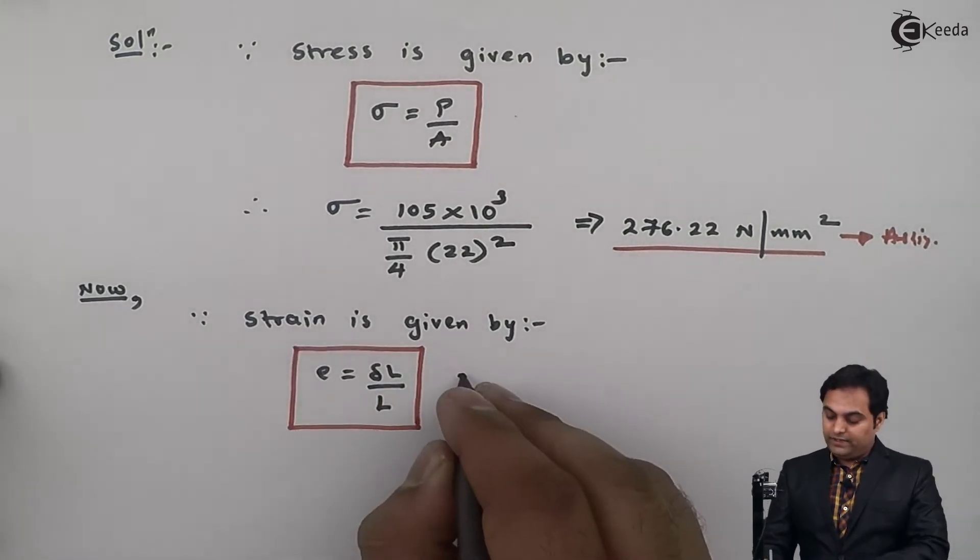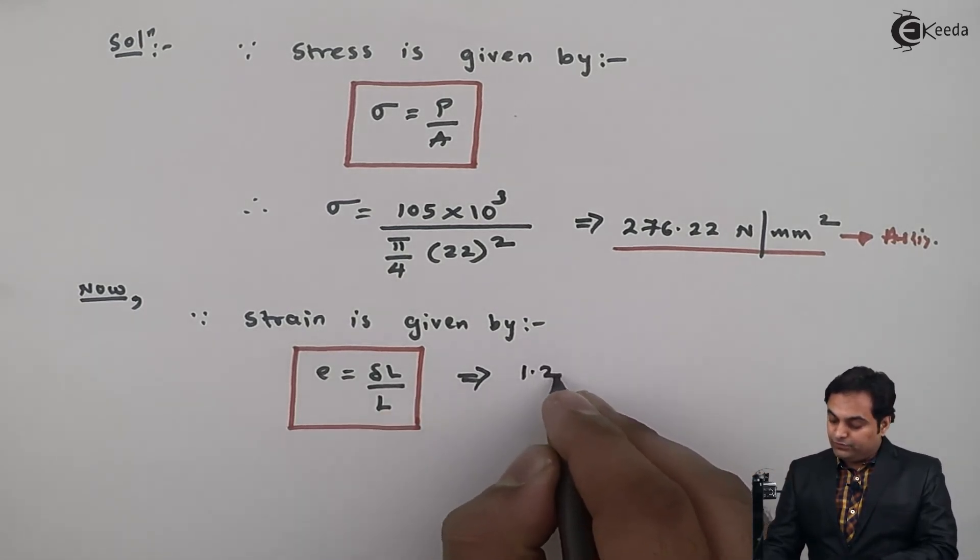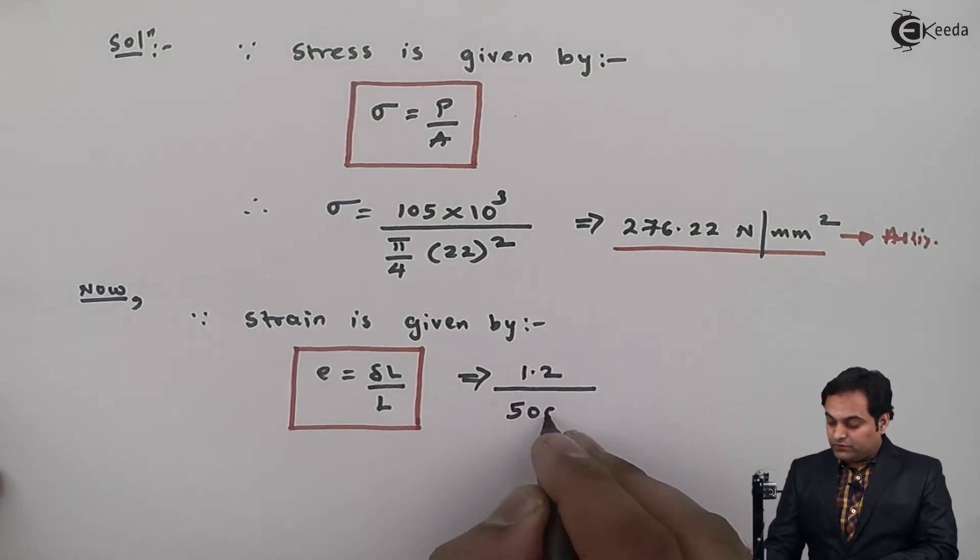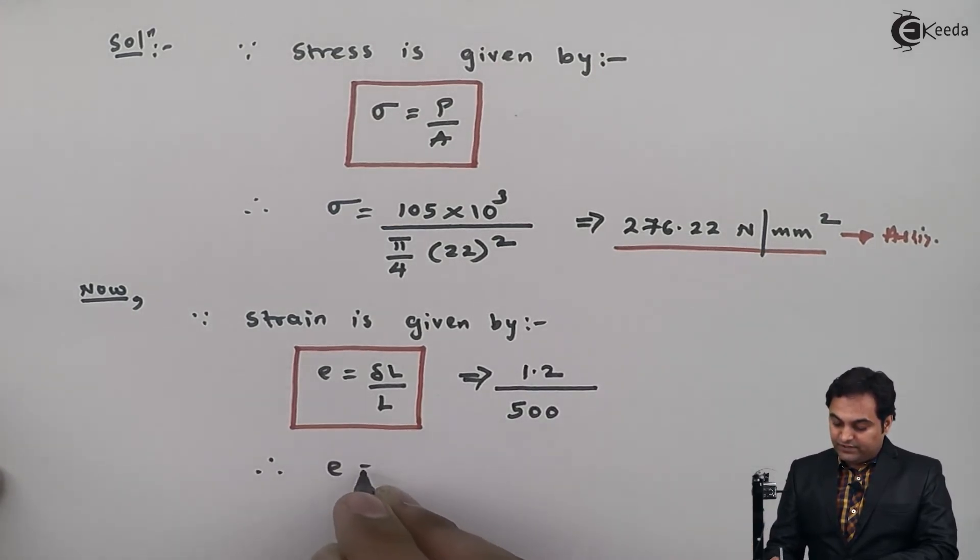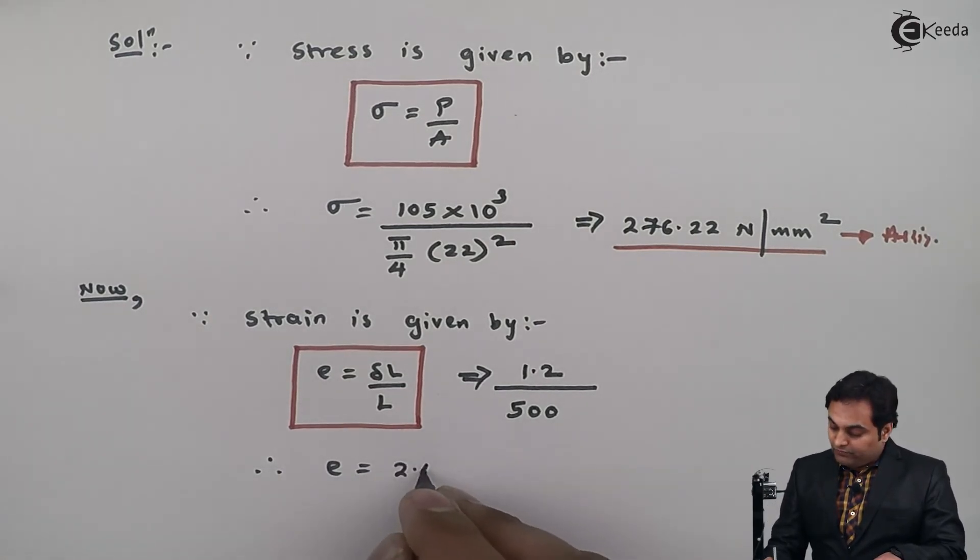So here I'll put the values: change in length is given in the problem, it is 1.2, that is the deflection, and length is 500. From this I will get strain, it comes out to be 2.4 × 10⁻³.